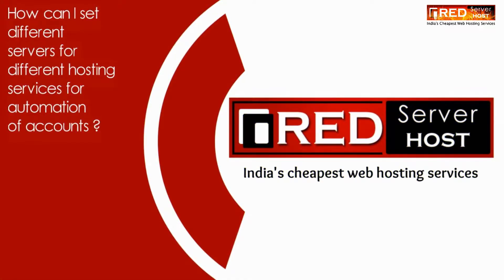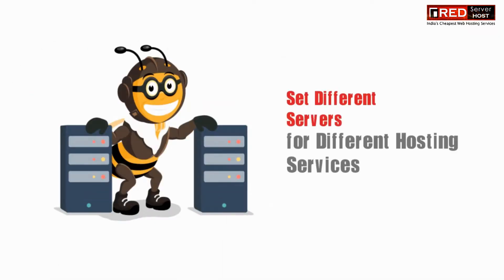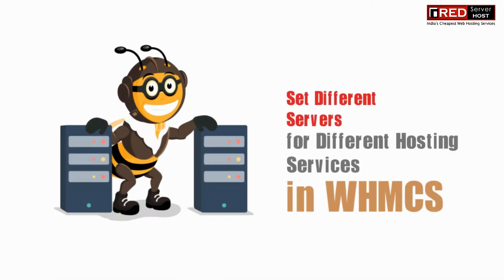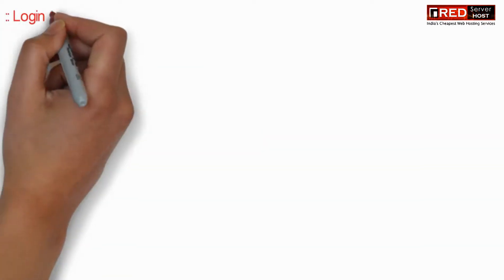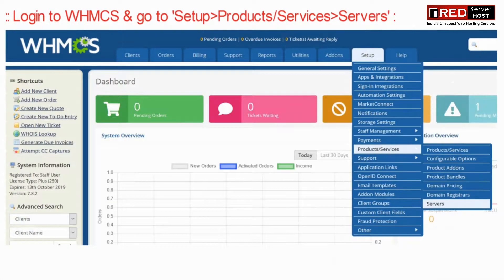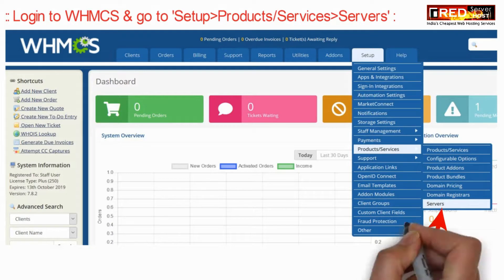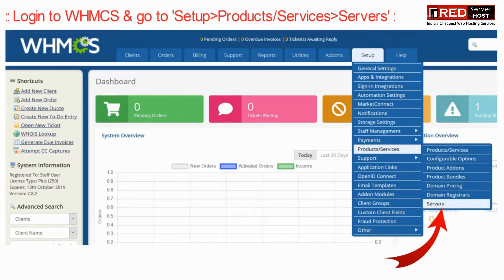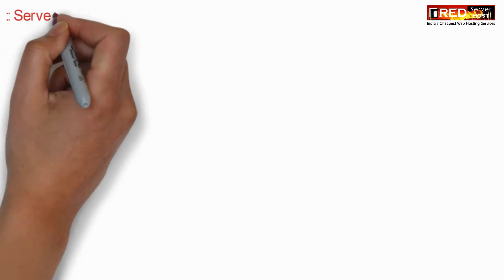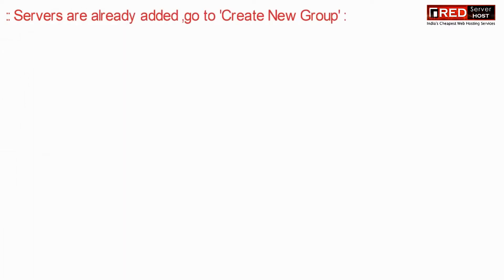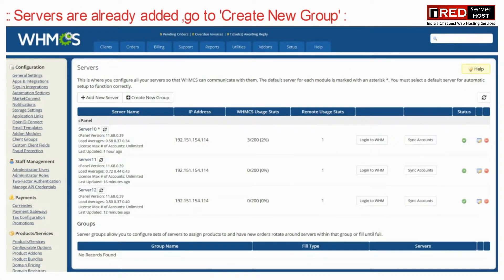Today in this video we will learn how to set up different servers for different hosting services for automation. For that, login to WHMCS and then go to Setup, Product Services, and then Servers.